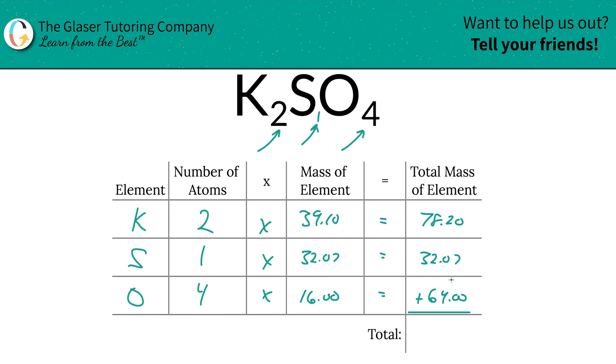Then to find the total mass of the entire compound, I think you know what to do from here, right? Just simply add up this column. And the total mass of potassium sulfate is going to be 174.27. And the units here are going to be in terms of gram per mole, because we're finding molar mass.